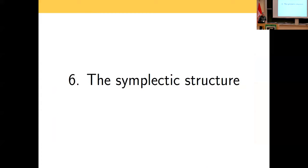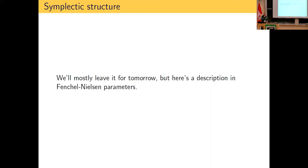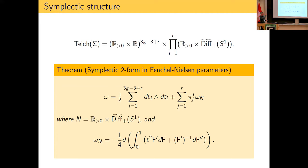I'm almost out of time, so the symplectic structure will mostly have to wait until tomorrow. But I can already give one answer in terms of Fenchel–Nielsen coordinates. The symplectic form on the full space has some terms like Wolpert's formula for the inner circles and some terms corresponding to the trumpet ends, each making a contribution given by a very explicit formula.